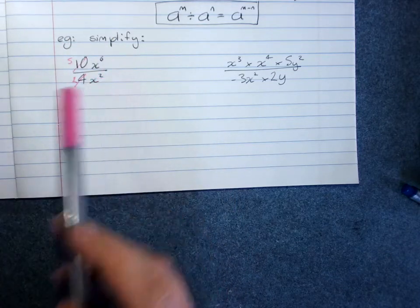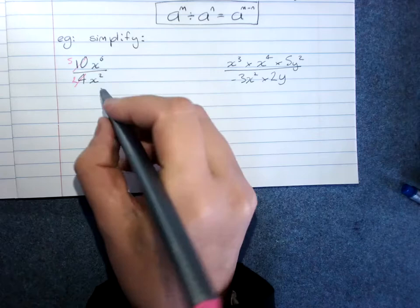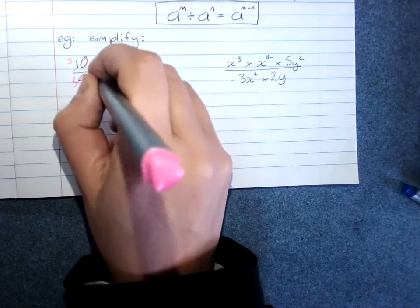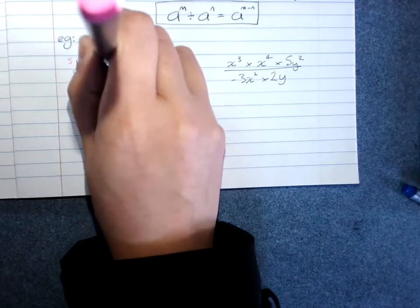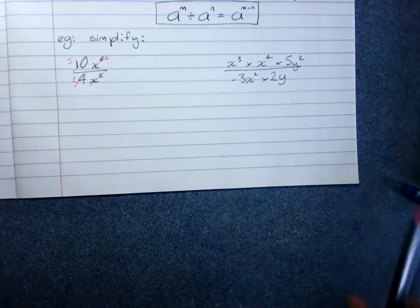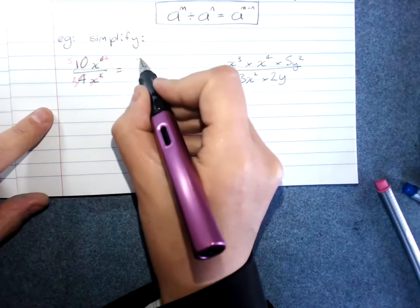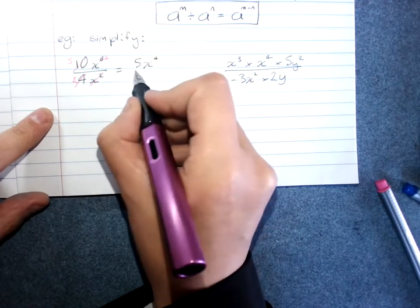x to the power of 6 divided by x to the power of 2. You can work out your cancelling by subtracting. I'm left with x to the power of 4. And so I have 5 x to the power of 4 over 2.